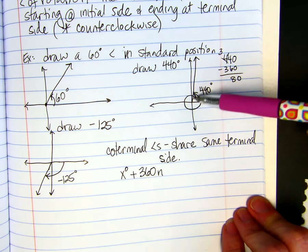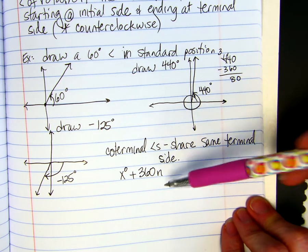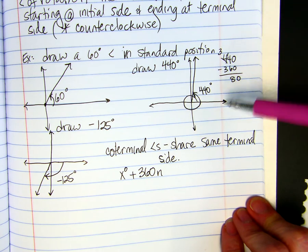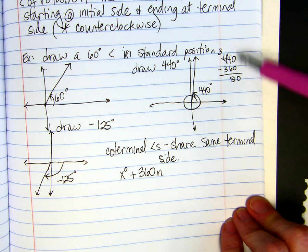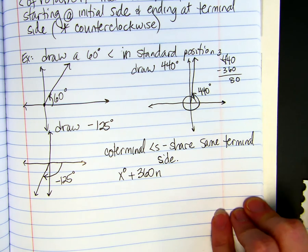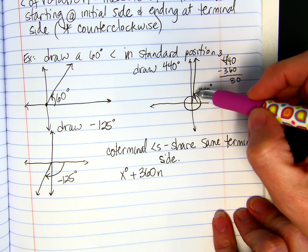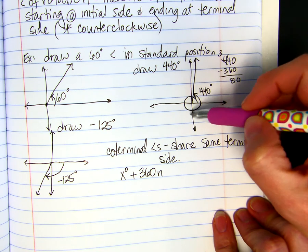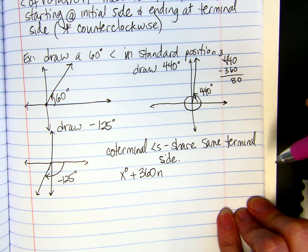If our angle measures 80 degrees, if we add 360, we'll get 440. We can add 360 again. We can even subtract 360. Subtract it again. Does n have to be positive? If you have 80 degrees minus 360, you still end up in the same spot. So yeah, it can be negative.